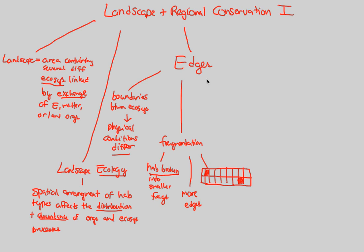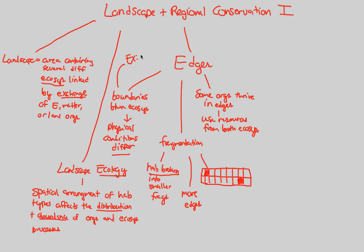In some scenarios, some organisms actually thrive in this edge environment. They thrive in edges because they are able to use resources quite effectively from both ecosystems. An edge involves two different ecosystems — like the lake and land scenario — and there are resources on both sides that some organisms can exploit.